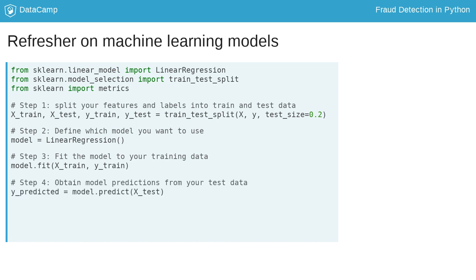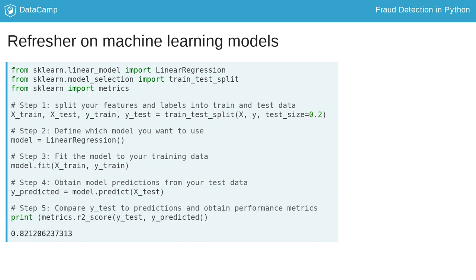Your model has now been trained and you can obtain predictions by running the model.predict function onto X-test. The last step is to compare your predictions from the model with the true values by combining Y-predicted with Y-test in a test metric. Here, we obtain an R-squared score for a linear model. We'll practice this once again in the exercises on a different model.